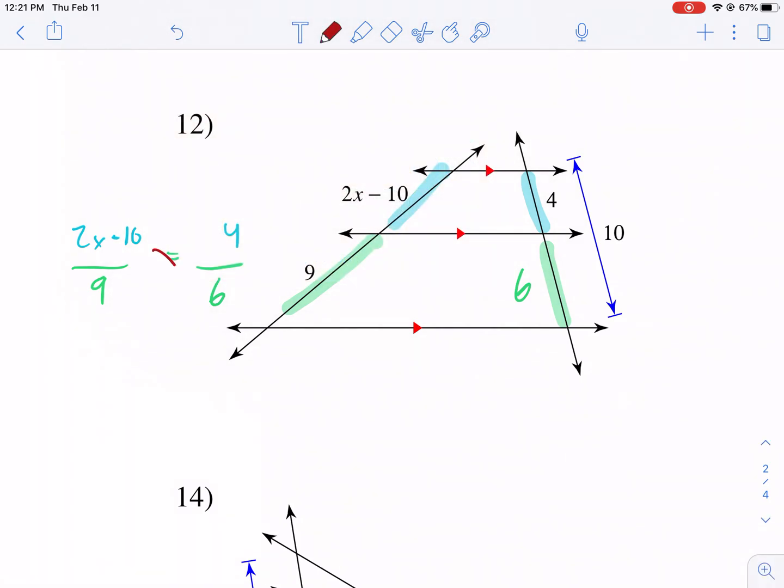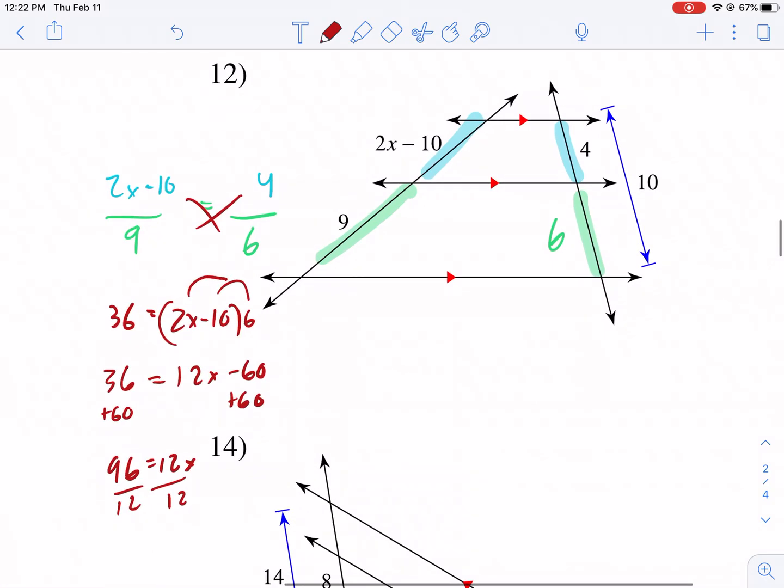Next up, we cross multiply. This is important, I wanted to show you this. We get 36, we have to distribute here. So we have to do 2x minus 10 times 6. So we need to distribute that 6 to both. So we have 36 equals 12x minus 60. And then we solve, we add 60, add 60. We get 96 equals 12x, and then we divide by 12, divide by 12. And we get x equals 8. So we get x equals 8.